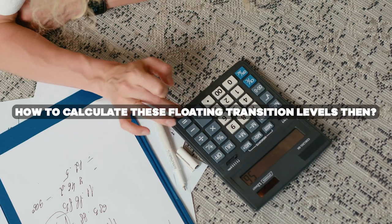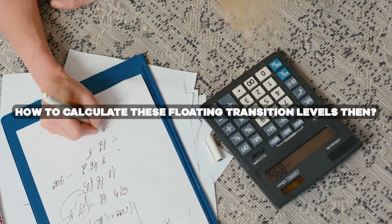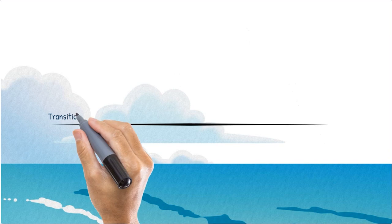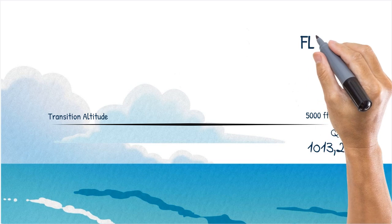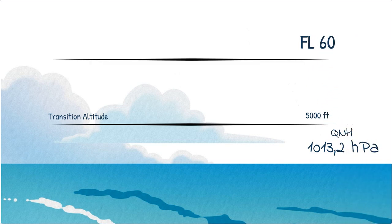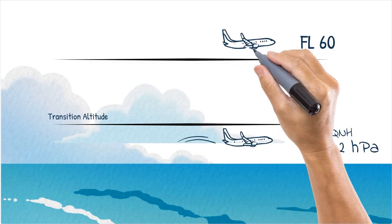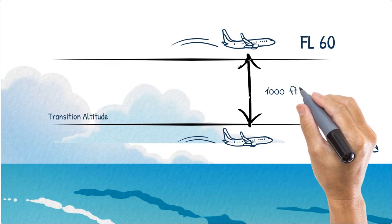And how to calculate these floating transition levels then? Let's assume that our transition altitude is 5,000 feet. When the QNH is precisely 1013, flight level 60 would be 1,000 feet above the transition altitude, making it perfect for a transition level.